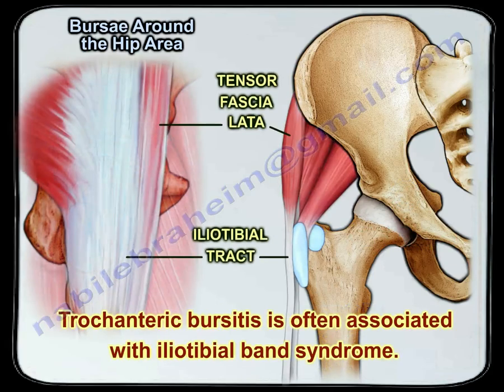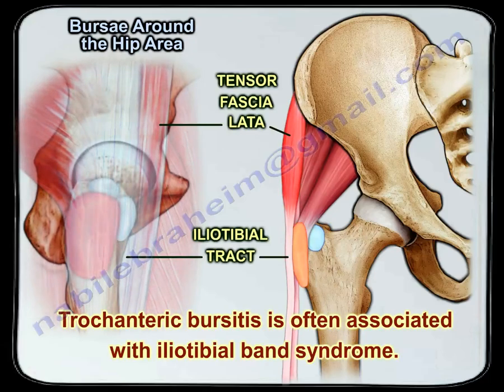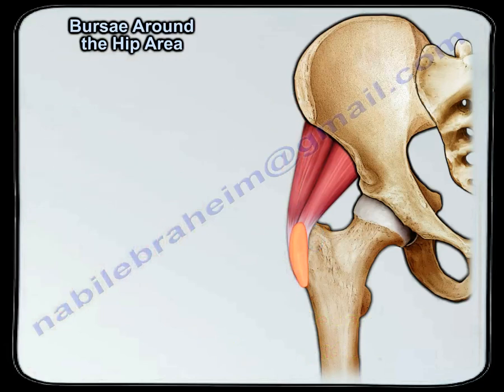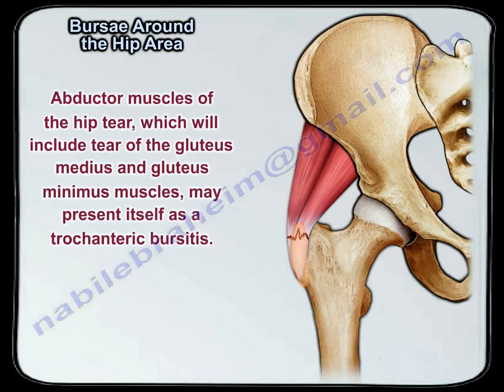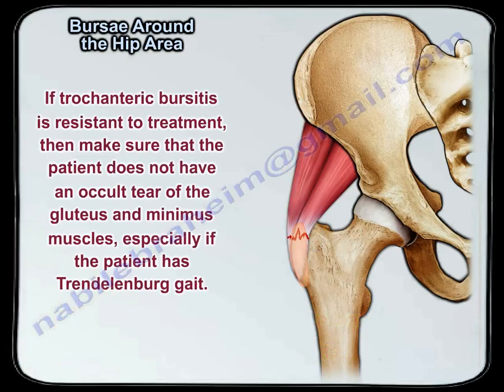Trochanteric bursitis is often associated with iliotibial band syndrome. Abductor muscle tears of the hip, including tears of the gluteus medius and minimus, may present as trochanteric bursitis. If trochanteric bursitis is resistant to treatment, make sure the patient does not have an occult tear of the gluteus medius and minimus, especially if the patient has a Trendelenburg gait.